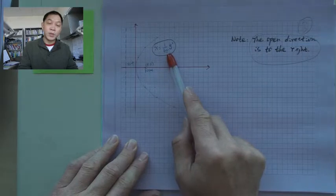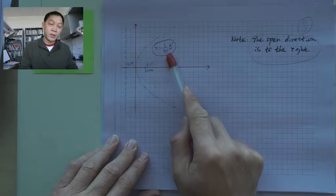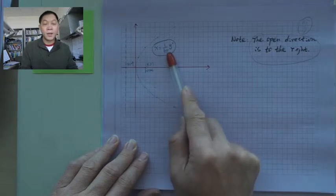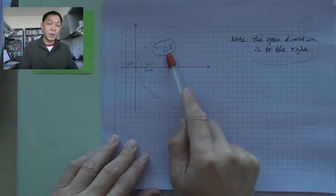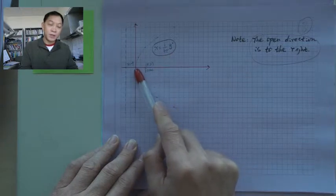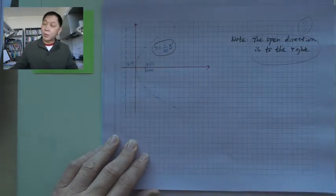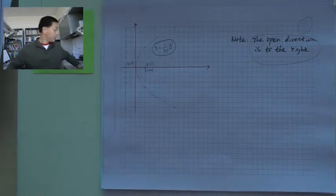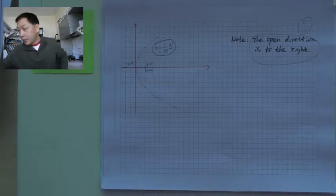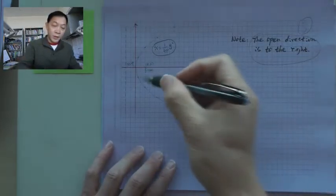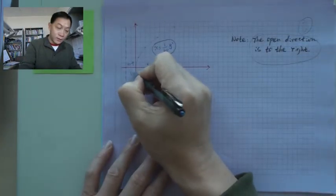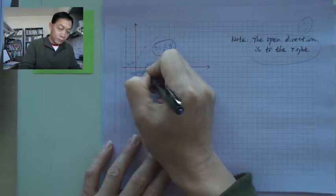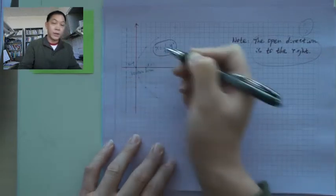Again, 4p always goes with the variable squared, and 4p is always in the denominator. And p is the distance between focus and vertex. I probably should write vertex somewhere here. Let me write it here: vertex. It's right here.